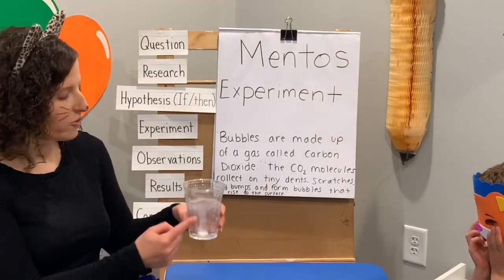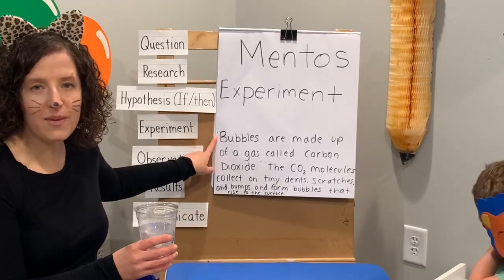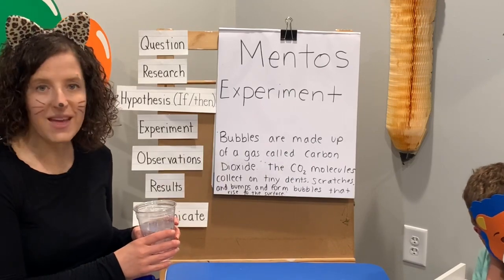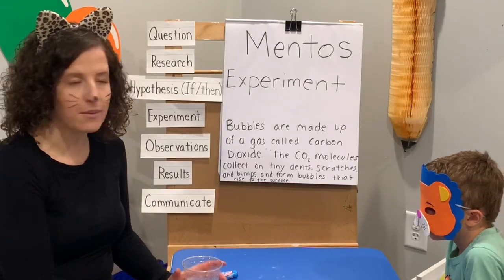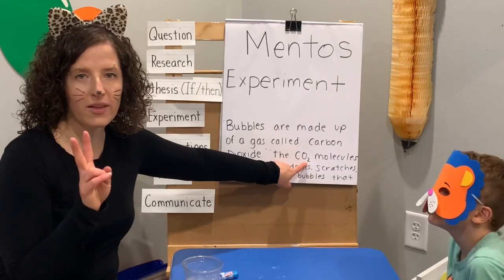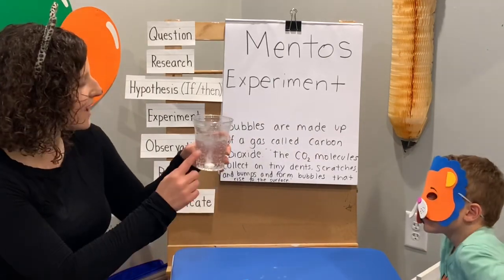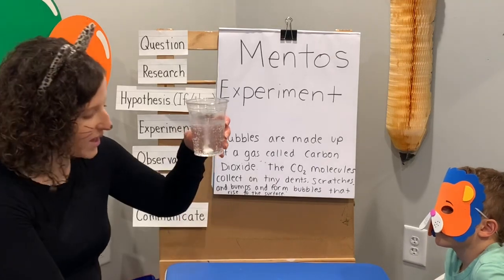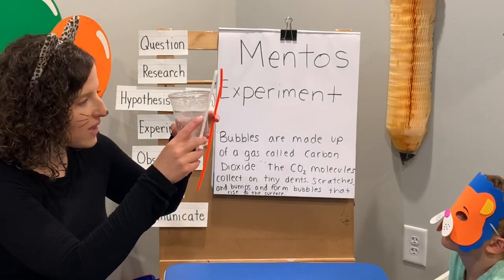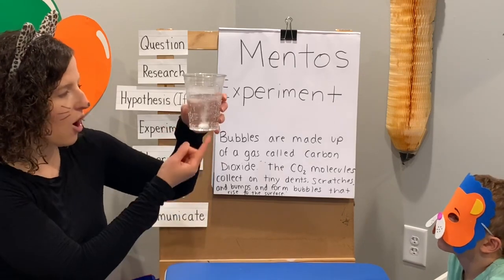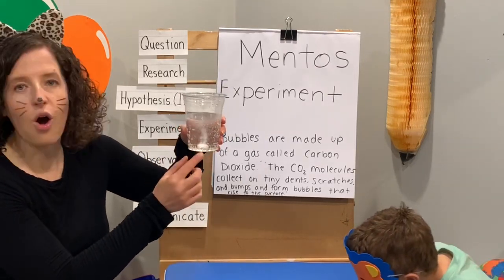So we're going to learn about the bubbles — why are these bubbles forming in our liquid? Bubbles are made up of a gas called carbon dioxide. Can you say that? Carbon dioxide. It's written like this: CO2 is another name for carbon dioxide because there's one molecule of carbon and two molecules of oxygen. The carbon dioxide molecules collect on any tiny dents, scratches, and bumps. So even though these look kind of smooth, if you had a really high powered microscope you would see that all along the straw, all along the pipe cleaner, and all along the Mentos, there are lots of bumps and dents, and along those tiny dents they formed all of the bubbles.